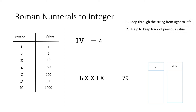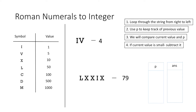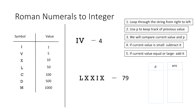While looping through the string from right to left, we will compare the current value with the previous value. If the current value is smaller than the previous value, we will subtract it from our answer. If the current value is greater than or equal to the previous value, we will add it to our answer.